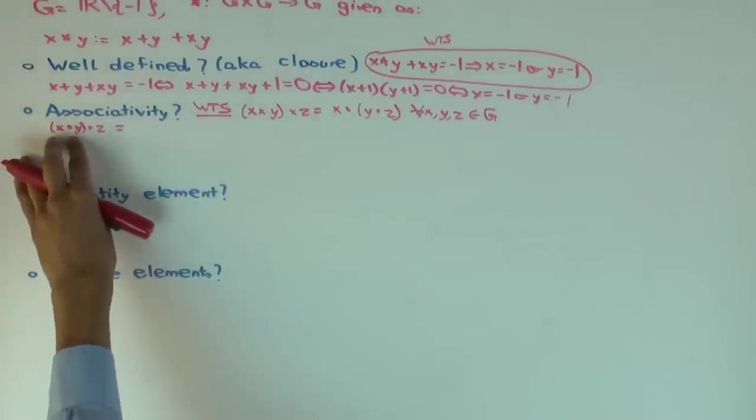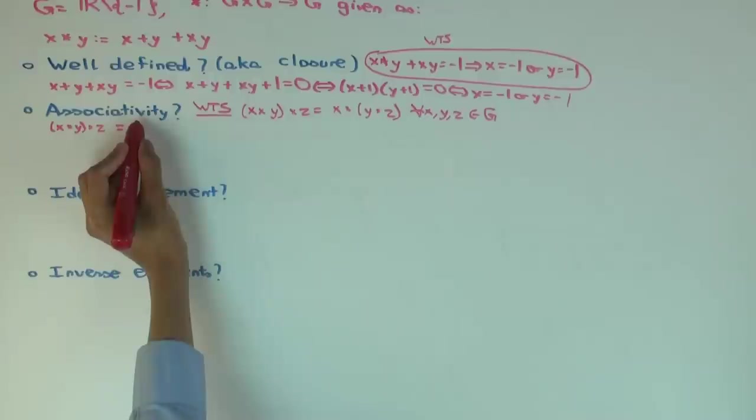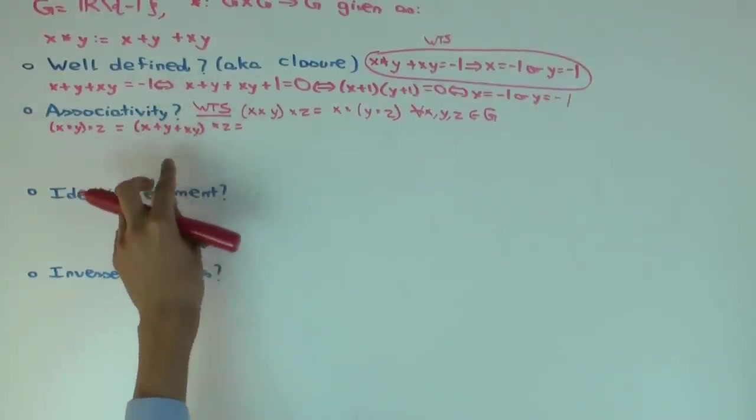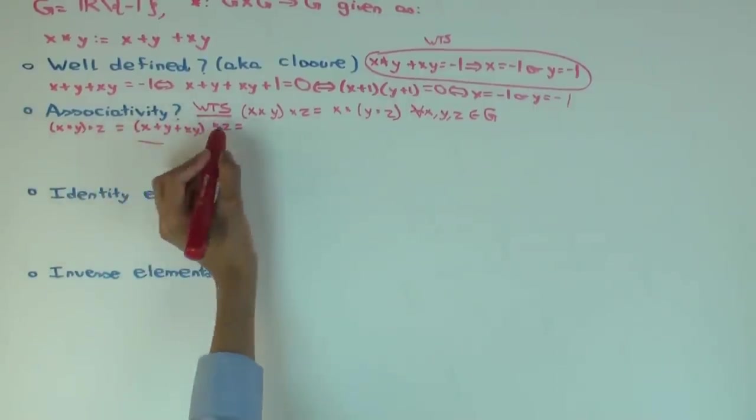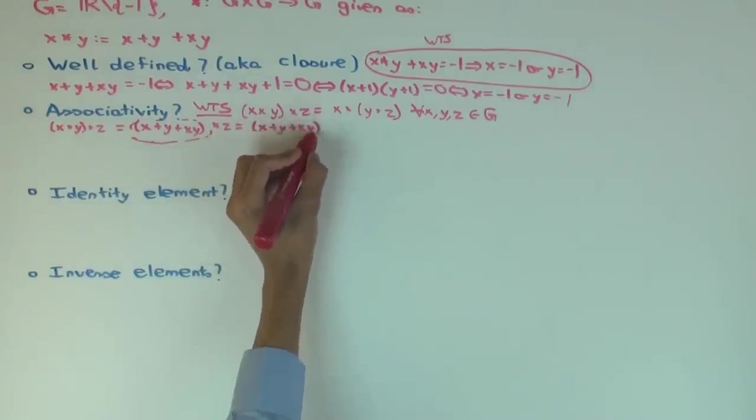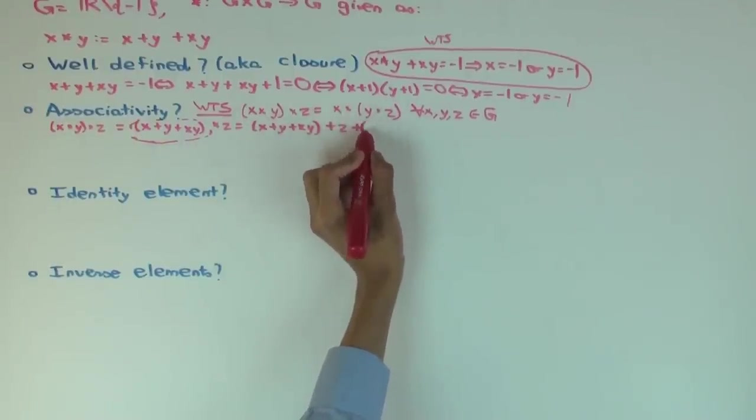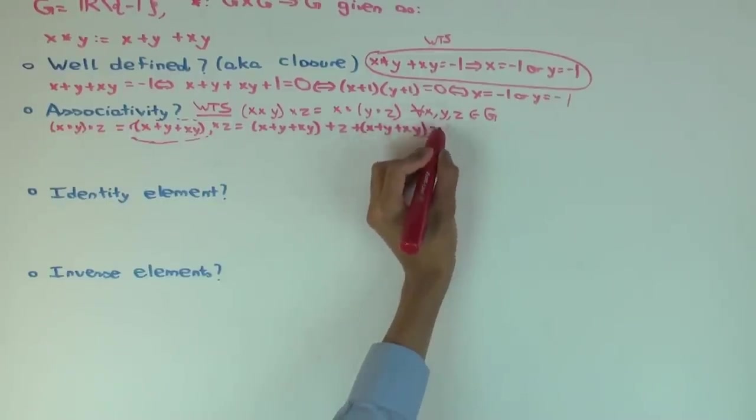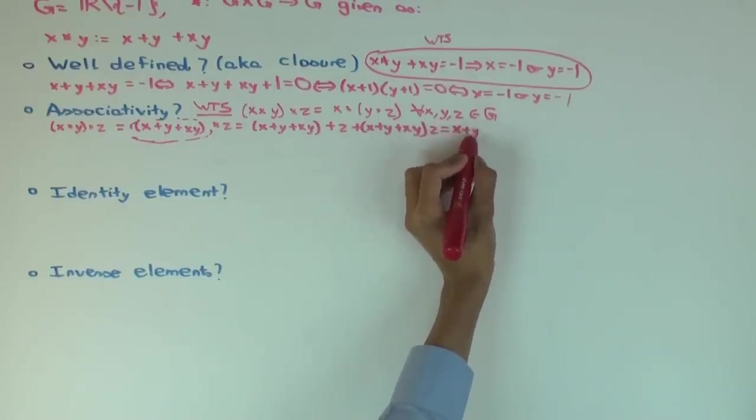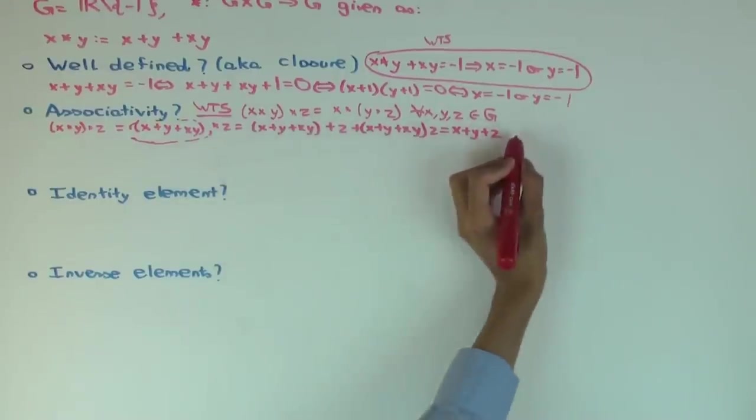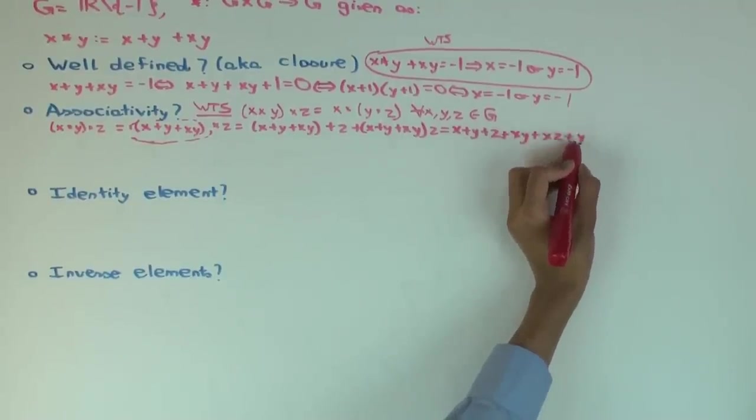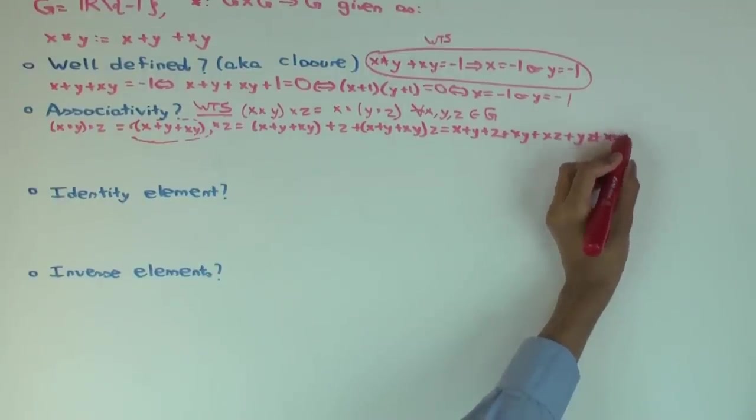We are trying to first calculate x star y and then we star that with z. What's x star y? x plus y plus xy. And now we have that star with z. Now you do the next round of simplification. This whole thing is your first input and z is your second input. So what will it be? x plus y plus xy plus z plus times z. Now if I just open and rearrange them, I'll get x plus y plus z plus xy plus xz plus yz plus, what's the last term? xyz.